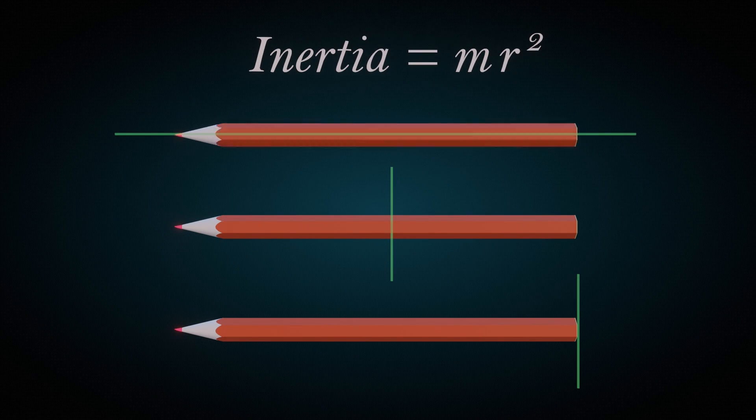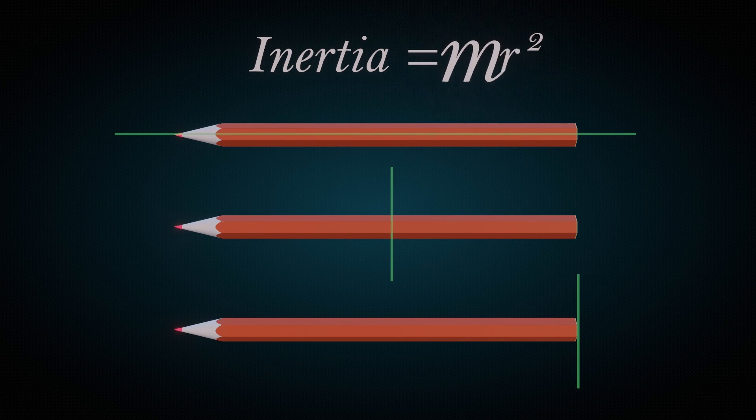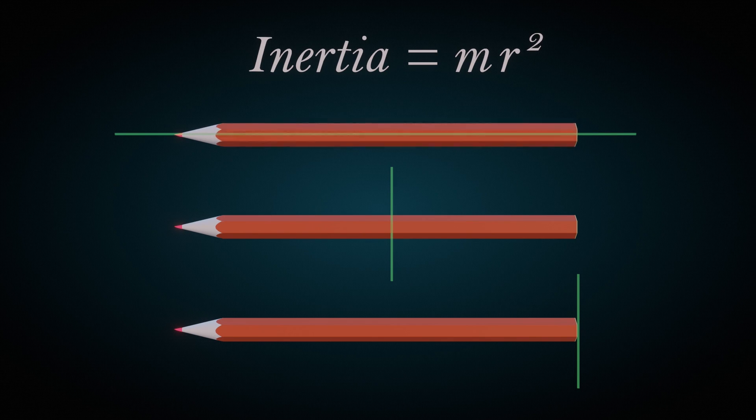In the first position, almost all the mass is very close to the axis, so the rotational inertia is smaller. That's why it's easy to rotate the pencil around your fingertip.